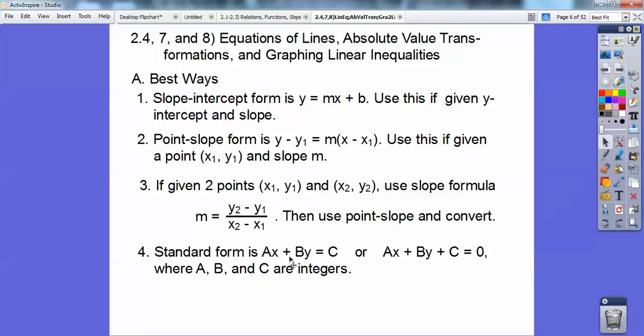Standard form is Ax + By = C or Ax + By + C = 0, where A, B, and C are integers. This c and this c are the same thing, just because this says plus c right here, but c is just a constant. It could be a positive or negative number. A always comes first with your x, and then B always comes second with your y. A, B, and C are all integers, so no fractions or decimals.